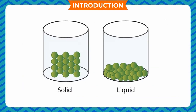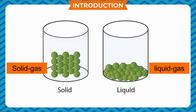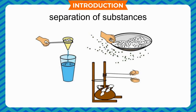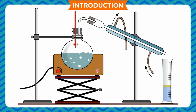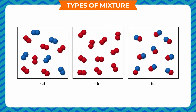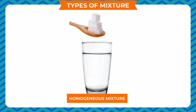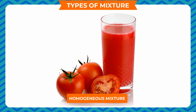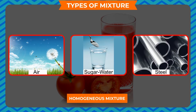Apart from these, there are many solid-liquid, liquid-gas, and solid-gas mixtures, and there are various methods of separation of substances from these mixtures. Types of mixture: on the basis of components present, mixtures can be of two types. Homogeneous mixture: the components forming the mixture are uniformly distributed throughout the mixture. We get the same amount of each component in different samples — for example, air, sugar-water solution, and steel.